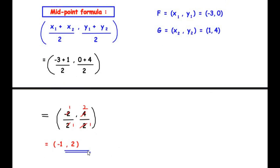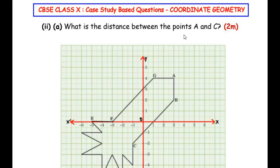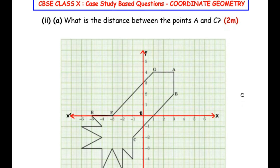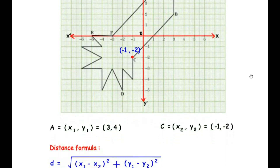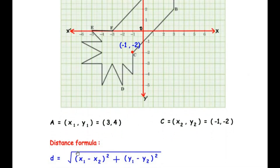Now let us move on to the second sub-question: What is the distance between the points A and C? Here in this graph sheet we have point A and point C, and we need to find out the distance between them. The coordinates of A are (3, 4) and the coordinates of C are (−1, −2). Since the distance between the points is asked, we are going to make use of the distance formula: D = √[(x1 − x2)² + (y1 − y2)²]. This can also be written as √[(x2 − x1)² + (y2 − y1)²] — both formulae give the same answer.